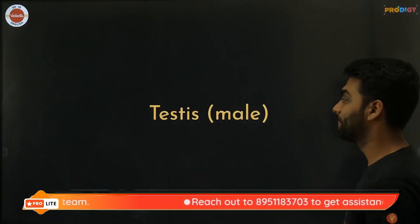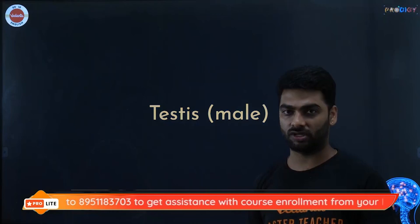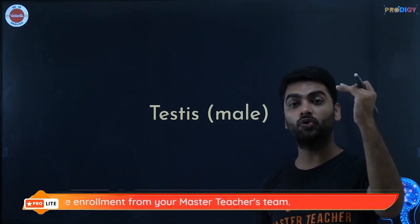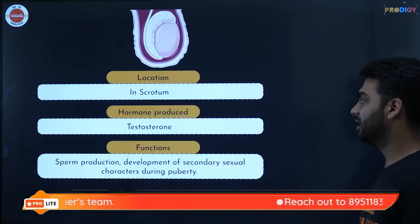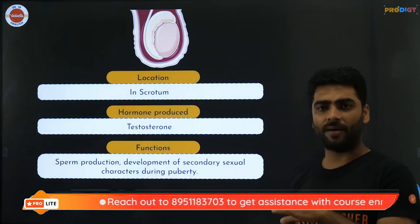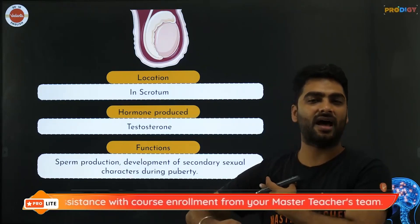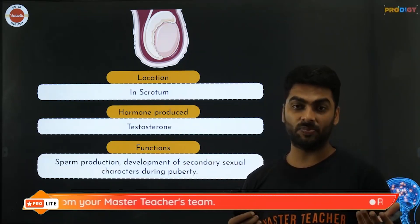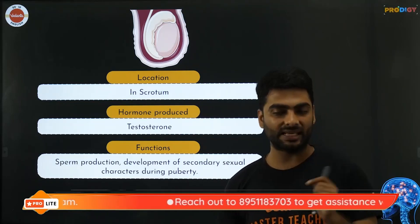The testes are organs present only in males, located outside the body in the scrotum at a temperature 2–3 degrees less than body temperature. The hormone secreted by the testes is testosterone. Testosterone is responsible for secondary sexual characters in males: facial hair, chest hair, armpit hair, acne, broad chest, broad muscles, and sperm secretion — all starting at puberty.